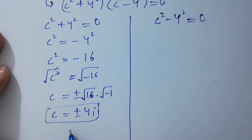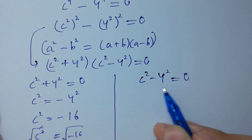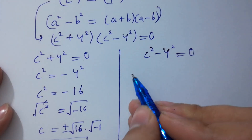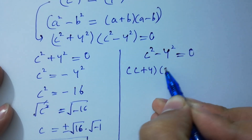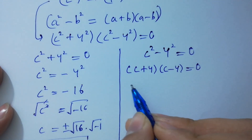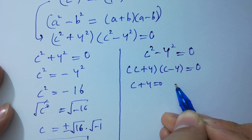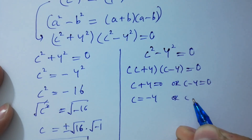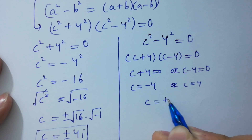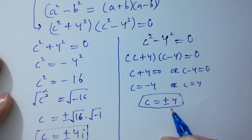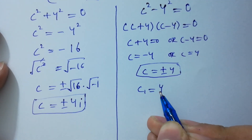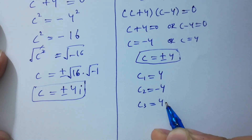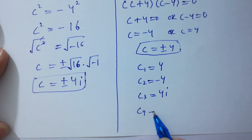We have two imaginary solutions. From c squared minus 4 squared equals 0, applying a squared minus b squared equals (a plus b)(a minus b), it becomes (c plus 4)(c minus 4) equals 0. So c plus 4 equals 0 or c minus 4 equals 0, giving c equals minus 4 or c equals plus 4 — two real solutions. Therefore c1 equals 4, c2 equals minus 4, c3 equals 4i, and c4 equals minus 4i.